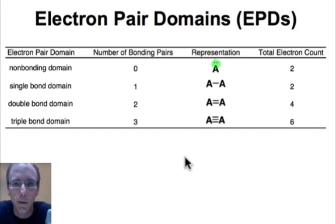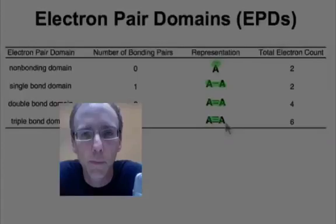And then we have three types of bonding domains involving single bonds, one pair of electrons, double bond domains involving two pairs of electrons, or triple bond domains in which the two atoms are joined by three sets of electron pairs.